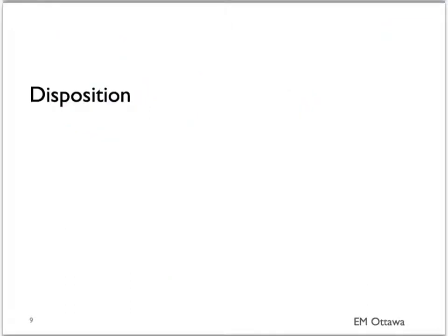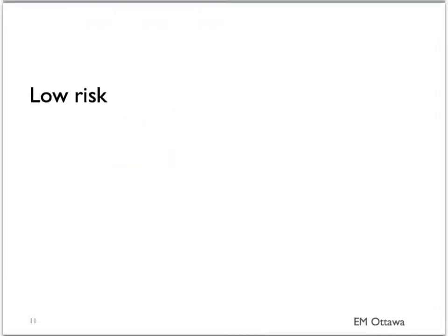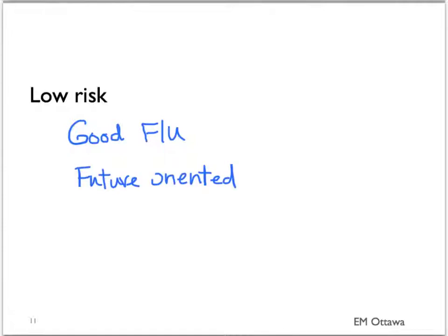That leads us into disposition. Those who've sustained injuries from the attempt will likely need to be admitted. Once their medical conditions are stabilized and treated, we can delve into their psychiatric risk and ask the questions we've outlined to assess their risk. For the patient with low risk, it's essential to set up good follow-up. We need to ensure a good support system is in place, the patient should have a future-oriented plan, and they need to feel safe enough to go home. Depending on your institution, you may still wish to discuss low-risk patients with the psychiatric team.